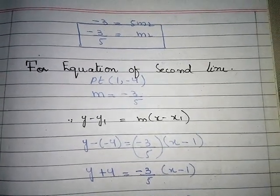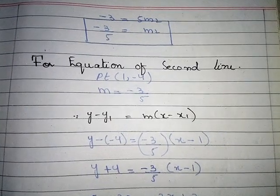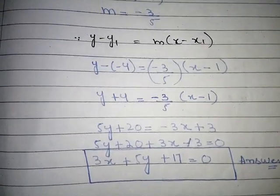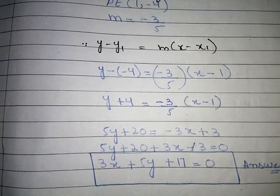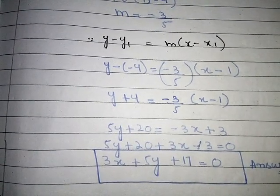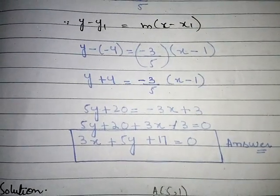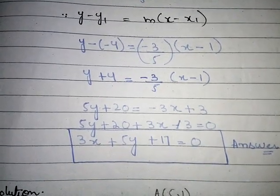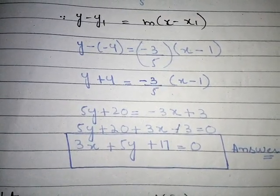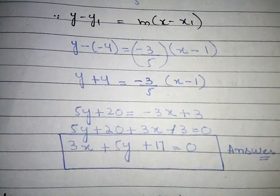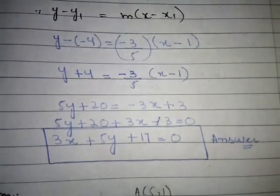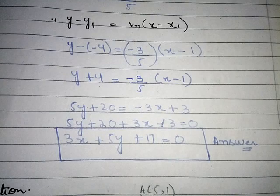For equation of the second line, the point is (1, -4) and slope m = -3/5. Using point-slope form: y - y1 = m(x - x1): y - (-4) = -3/5·(x - 1), so y + 4 = -3/5·(x - 1). Multiplying by 5: 5y + 20 = -3(x - 1), so 5y + 20 + 3x - 3 = 0, giving 3x + 5y + 17 = 0. This is the required equation.